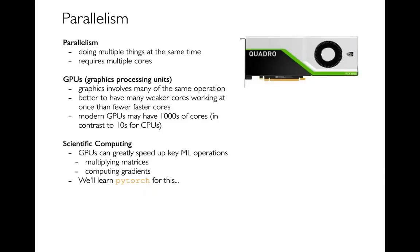PyTorch will also help us run code on GPUs. We can take two matrices, send them to a GPU, and multiply them together — it almost magically goes faster than on a CPU. It doesn't take much code to move things to the GPU. So PyTorch is very powerful both for calculus and for GPU acceleration.